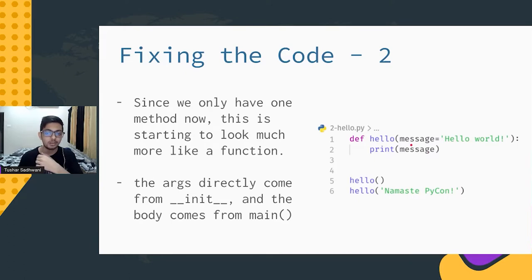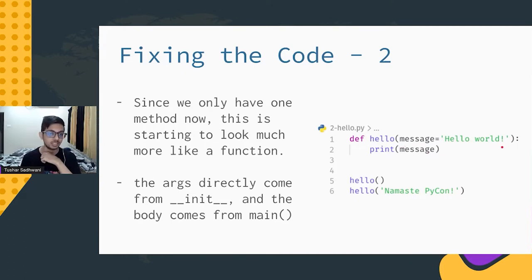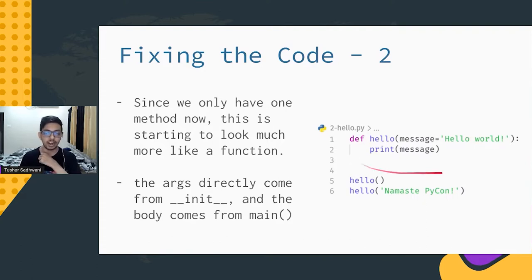The main thing is that this class has one constructor that sets a property and one method that makes use of that property. Do you know what this construct is called? It's called a function. Converting the class into a function wasn't really much work — all I had to do was take the function signature from the constructor and the body from the main method, and the whole class collapses into one function.